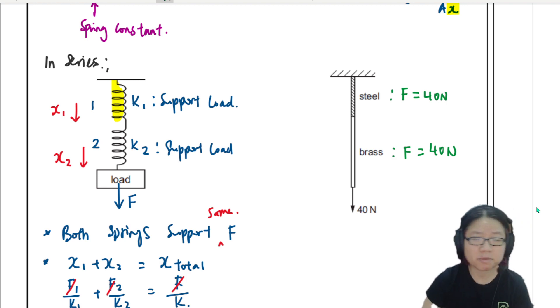And when you exert that force, maybe the steel bar has a young modulus of ES for steel, and maybe the brass has a young modulus EB for brass. You know that this one will have an extension. Let's say I call this XS for steel, and this extension is XB for brass.